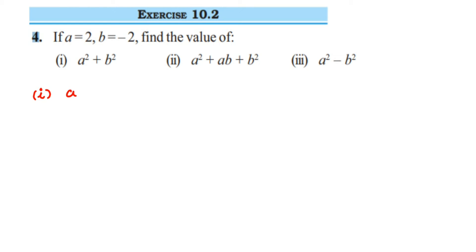The first question is a squared plus b squared. In place of a, we substitute 2, so it's 2 squared. In place of b, we substitute minus 2, so minus 2 squared.